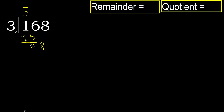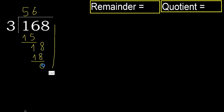Bring down 8, making 18. 3 multiplied by 7 is 21, which is greater. 3 multiplied by 6 is 18, which is not greater. Subtract — remainder is 0. There are no more digits, therefore finish.